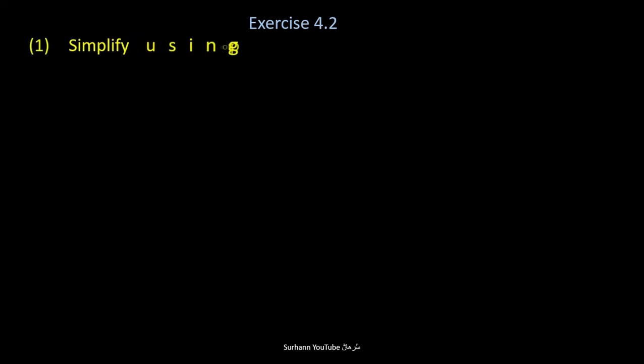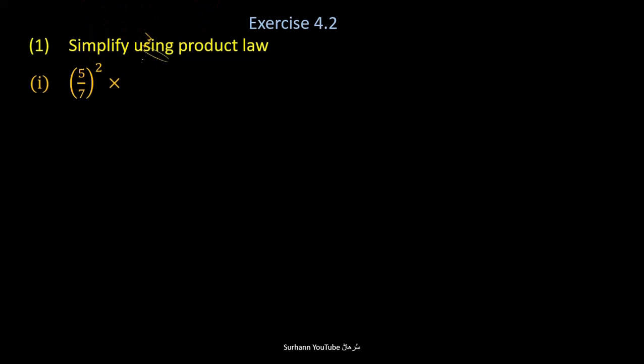Now let us start exercise 4.2. Question number one says: simplify using product law. Problem number one: 5 upon 7, whole to the power 2, multiplied by 5 upon 7 to the power 4.